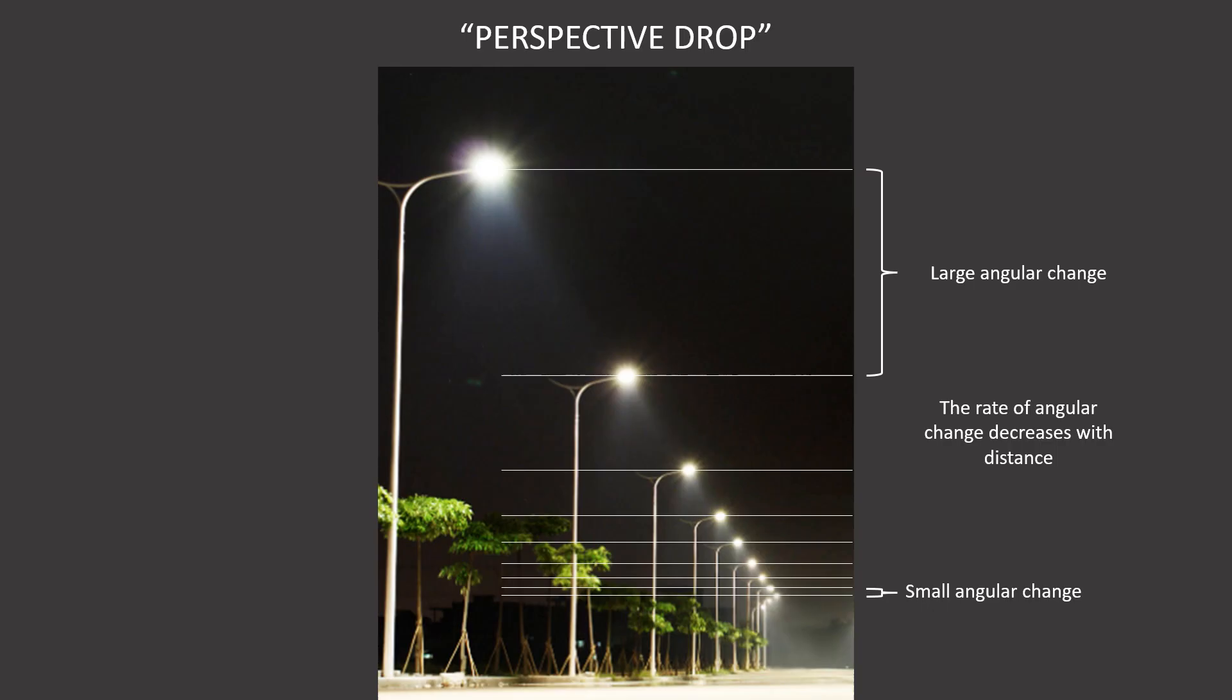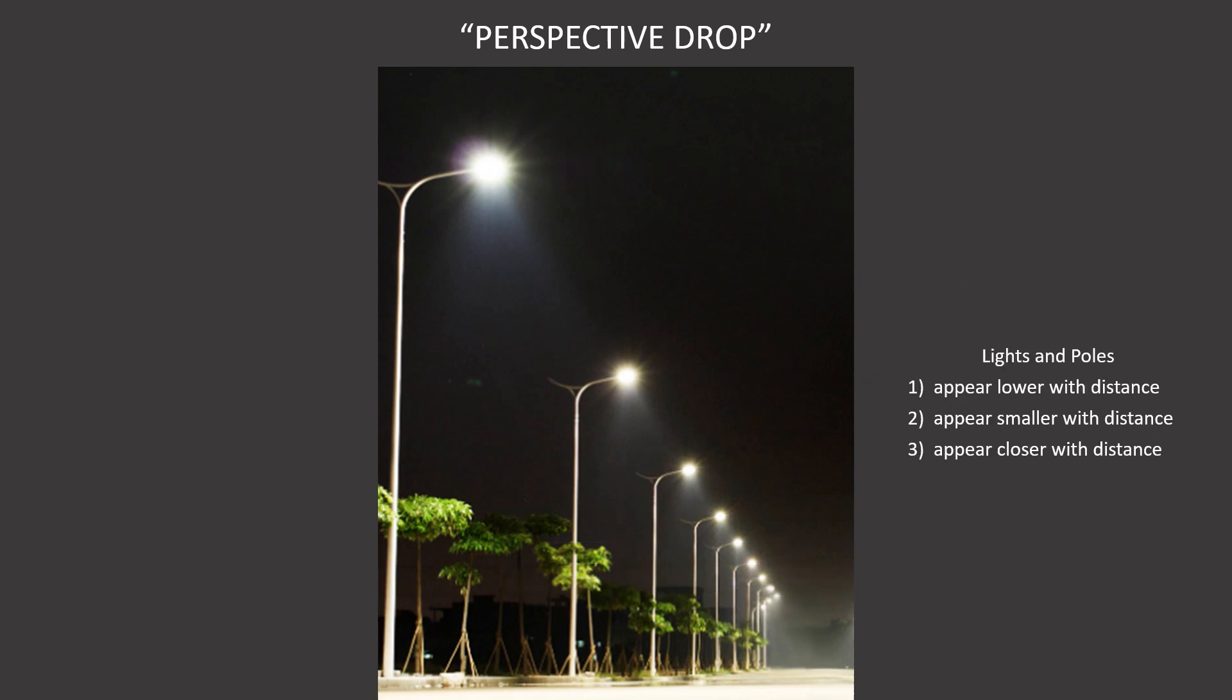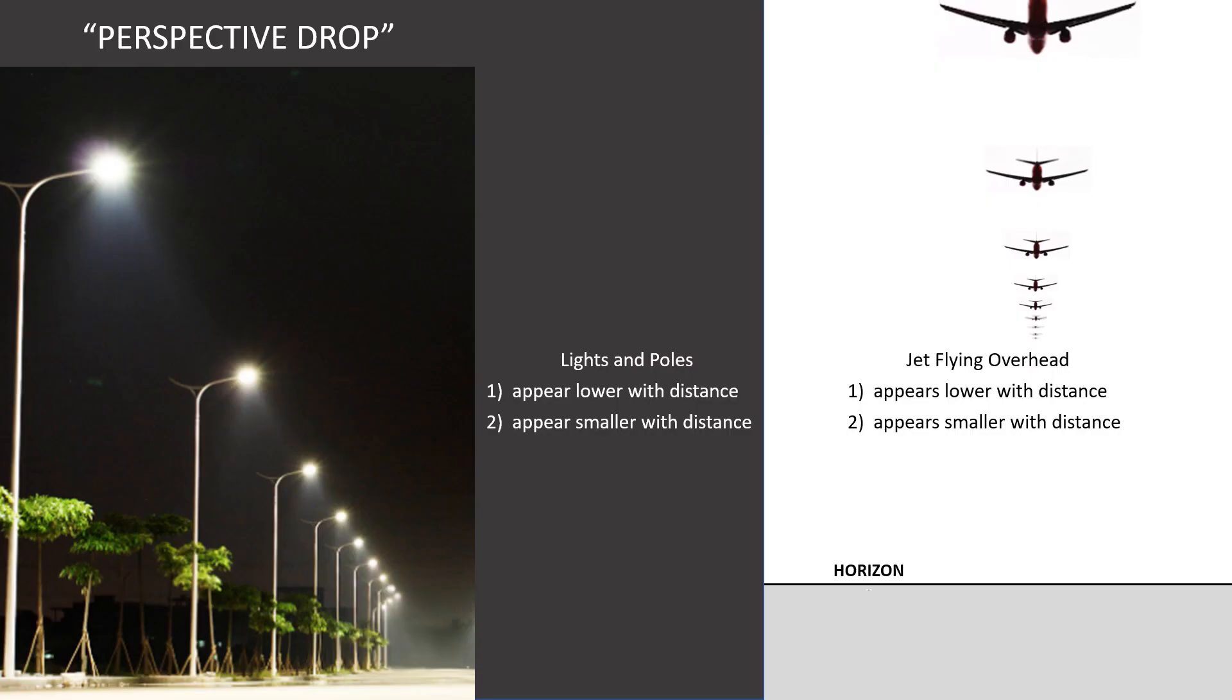And it is quite easy to see this with this row of streetlights. So what paper organist calls perspective drop is causing three things to happen with these lights and poles. They appear lower, smaller, and closer together with distance. Now we see the exact same thing with the jet flying overhead, since it also appears lower and smaller with distance.